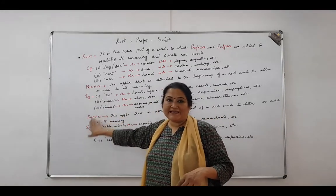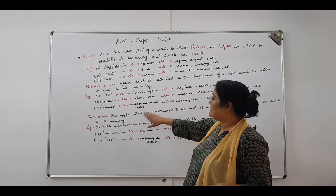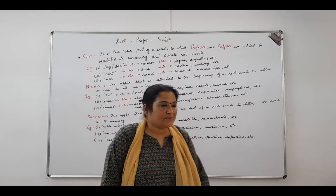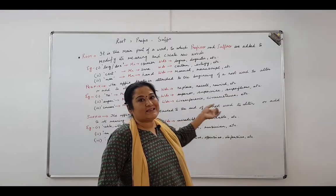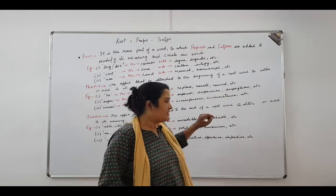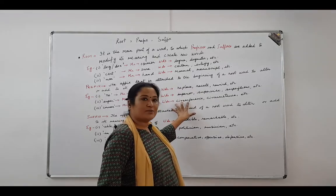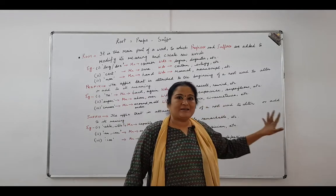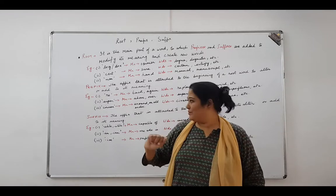Let's come to the third prefix: 'circum', which means around or on all sides. Immediately, you go back to your geometry classes where you learned about circumference — the boundary line that encloses a centre in a circle, something that goes around. Another word is 'circumstance', which is a situation that exists all around you.